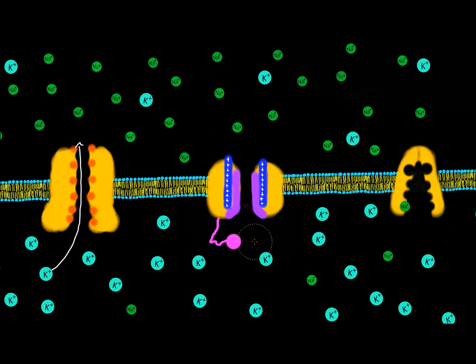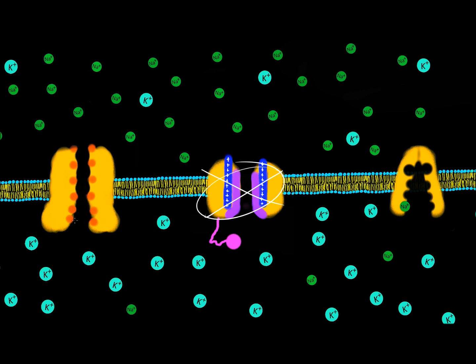Let's assume for now that the sodium channel is completely shut — it is closed. That leaves the potassium channel open, so potassium is just going to start diffusing through. The potassium channel only lets potassium through.